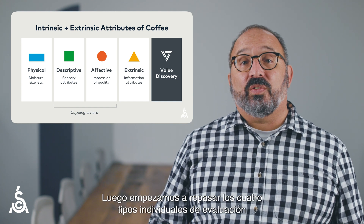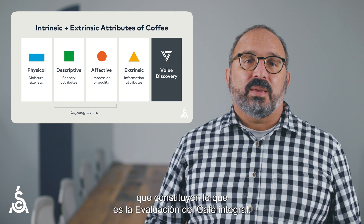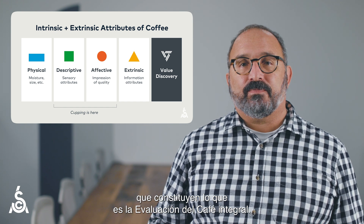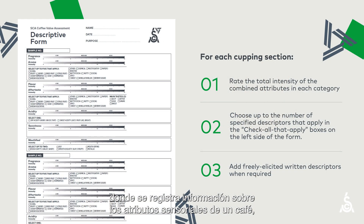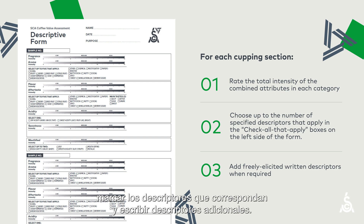We then began to review each of the four individual assessment types that make up the holistic CVA. First, the descriptive assessment, where you'll record information about a coffee's sensory attributes using basic olfactory references tied to the World Coffee Research Sensory Lexicon. You'll use this assessment to record the intensity of each category, check all that apply descriptors, and write freely elicited descriptors.